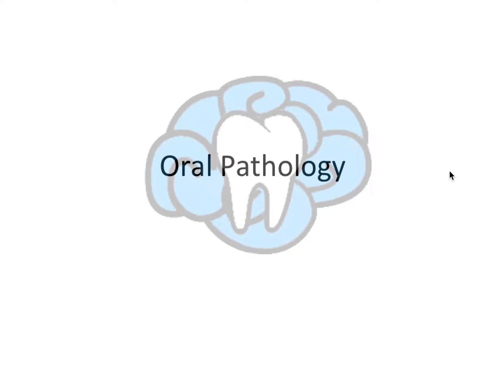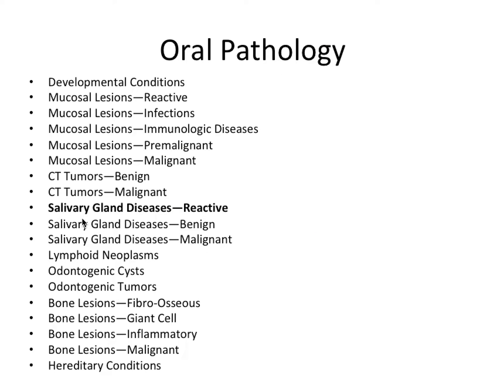Hey guys, it's Ryan. In this video we're going to continue to talk about oral pathology and now we're going to move to salivary gland diseases. We just finished talking about connective tissue tumors which are part of the submucosa, and now we're going to stick with the submucosa but this time talk about diseases that impact salivary glands specifically. For this first video we're going to talk about reactive lesions. Both major and minor salivary glands can be subject to numerous reactive influences including trauma, infection, metabolic changes, and immunologic dysfunction.